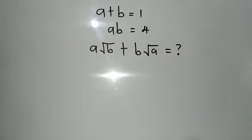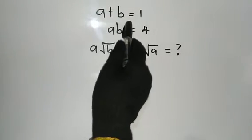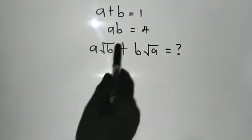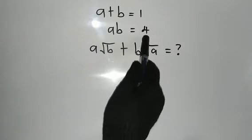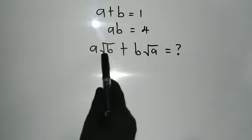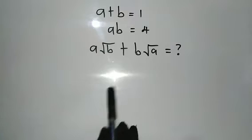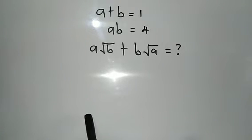Hello, welcome back once again to my YouTube channel. Today we have an interesting olympiad math problem. We're given that a plus b is equal to 1 and a times b is equal to 4. We're going to evaluate the expression a times the square root of b plus b times the square root of a. I'm going to show you the trick behind the solution to this problem.